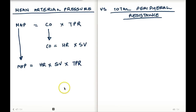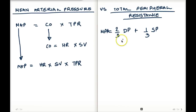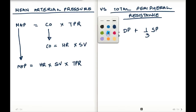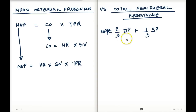Another equation we have is: mean arterial pressure equals two-thirds diastolic pressure plus one-third systolic pressure. This makes more intuitive sense because we are calculating the mean — the average arterial pressure — which is determined mostly by diastolic pressure, since diastolic pressure is the baseline pressure in the aorta, plus some contribution from systolic pressure. We'll use the first set of equations to understand mean arterial pressure.